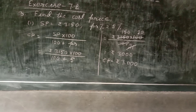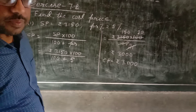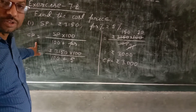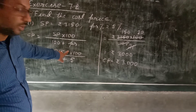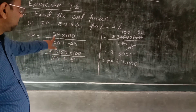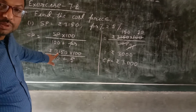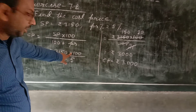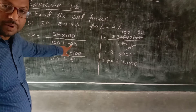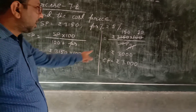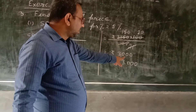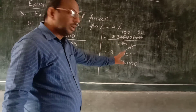Question number 3, roman number one: SP and profit are given; find the cost price. Using CP equals SP into 100 by (100 plus profit), with SP = 3150 and profit = 5%, we get 3150 into 100 by 105. Calculating this, CP equals Rs. 3,000.